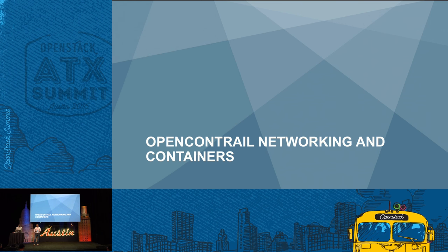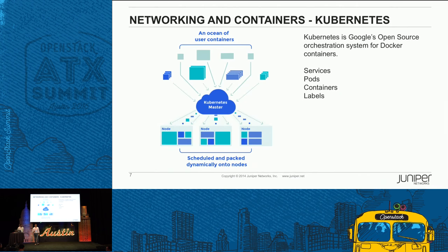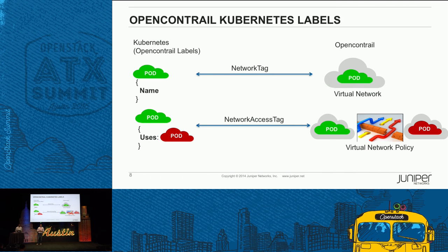The other thing I want to talk about is the work we're doing with Kubernetes and Mesos — I'll focus on Kubernetes today. Kubernetes is the Google open-source orchestration system and has a concept of services, pods, containers, and labels. It offers a flat networking architecture today, and various solutions are trying to solve that — open Contrail is one of them. When you launch a pod, it has a name and offers DNS-based service to an outside entity, and there's a concept of labels that we use to associate Kubernetes concepts into Contrail concepts.